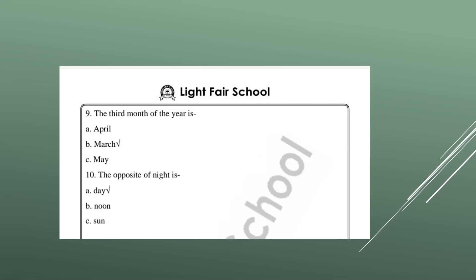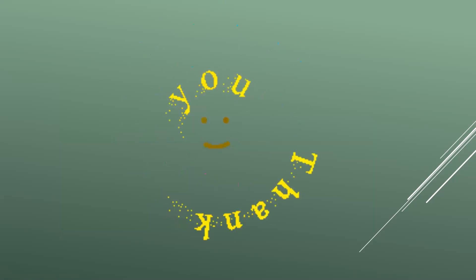The opposite of night is day. Night is black and day is white. The sun gives light to us during the day, while night does not. So the correct answer is day. That's all for today — thank you so much for joining my class.